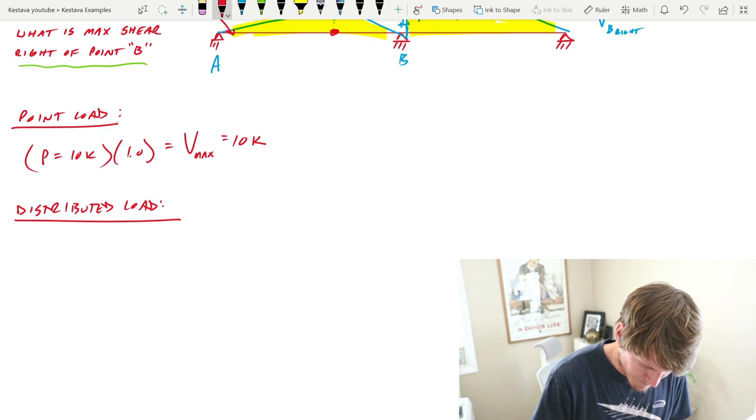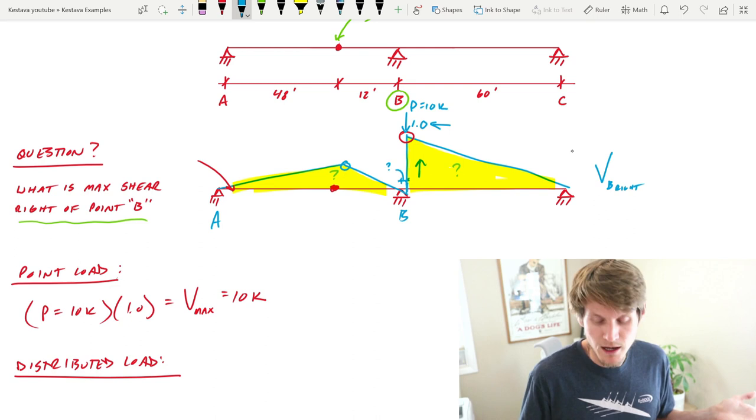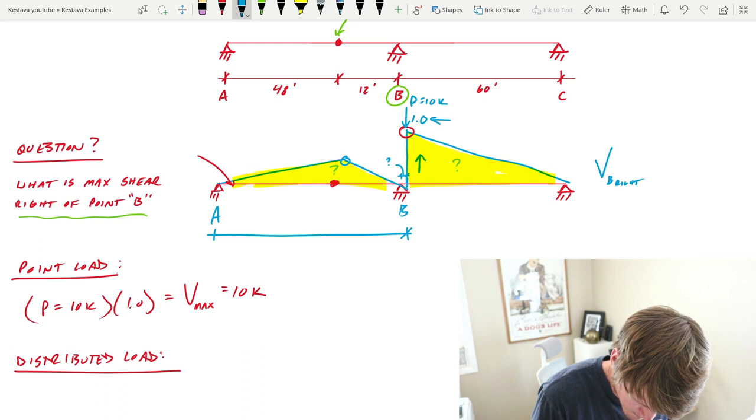So we need to find the area of this yellow. Let's do that. One other thing we need to do though is we have 1.0 for the peak over here, but we don't have this value, and we're going to need that value in order to get the area of these triangles.